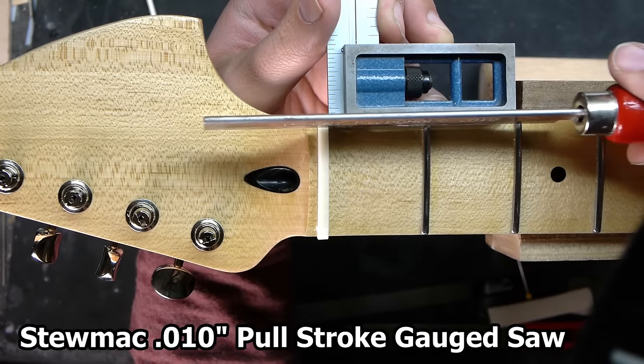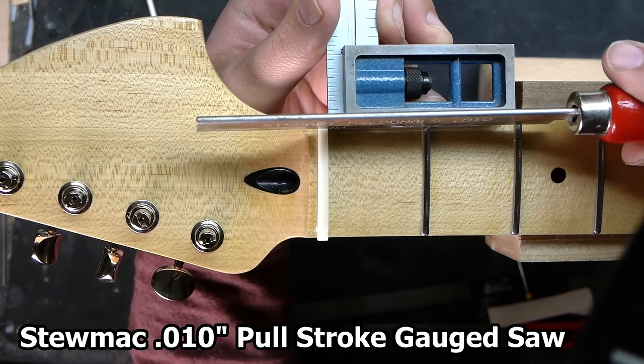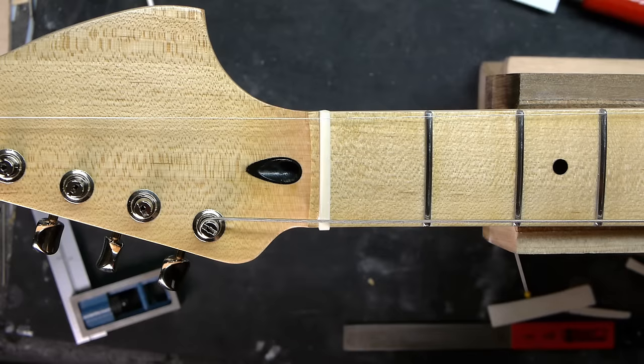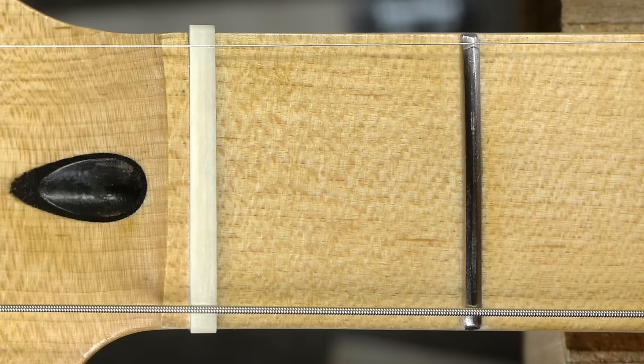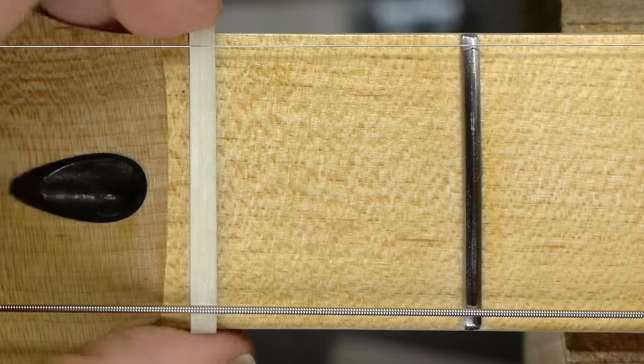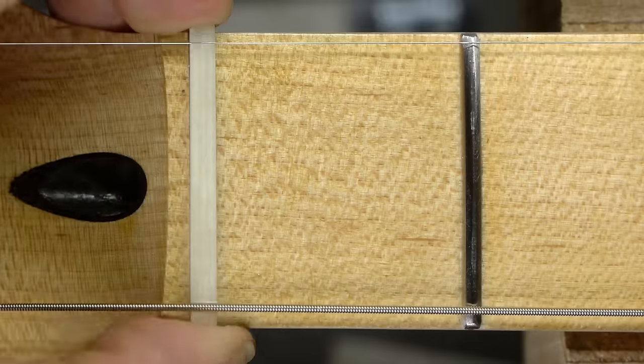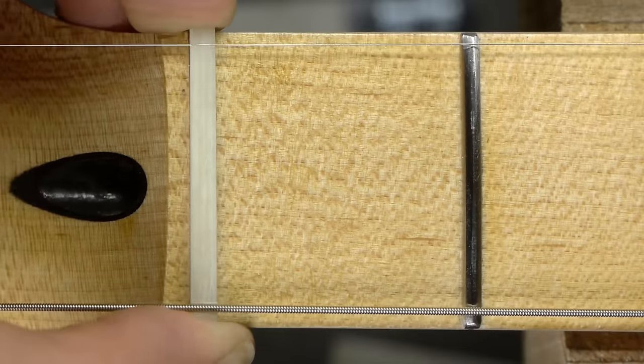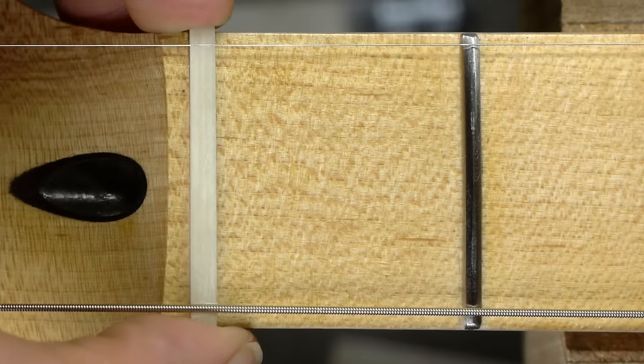For the high E string, I'll be using a Stumac 10 thousandths pull stroke gauge saw, which is a lot more rigid and stable than the equivalent size nut file. Double check the spacing, then deepen the slots so you can tune the strings to pitch without having them pop out. The double square does a great job, but it helps to have left the nut a little proud on both sides, so you have room to align it and get both E strings the exact same distance from the fret bevel on either side.